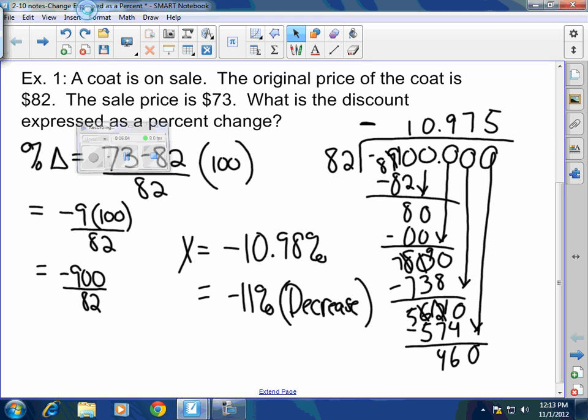Now, sometimes on the SAT, they will not put the negative here. They won't. They'll just put the answer as 11% decrease, or they'll have another choice of 11% increase. Please remember, if it's negative, it's a decrease. Does that make sense, guys? It's pretty simple, right?